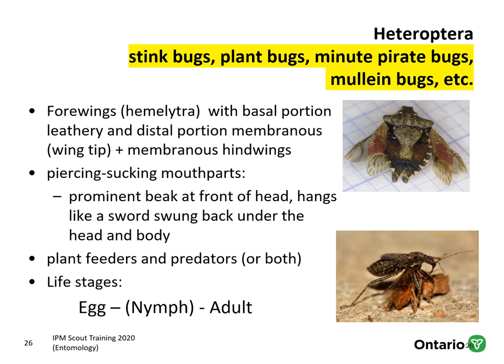Heteroptera are considered the true bugs — they all have the word 'bug' in their common name: stink bugs, plant bugs, mullein bugs, minute pirate bugs, etc. In this group, the four wings (called hemilytra) have a basal portion that's leathery and a distal membranous portion — visible in the brown marmorated stink bug. They also have piercing-sucking mouthparts, but the beak rises from the front of the head. They can be plant feeders and predators or both. Life stages include egg, nymph, and adult — gradual metamorphosis.